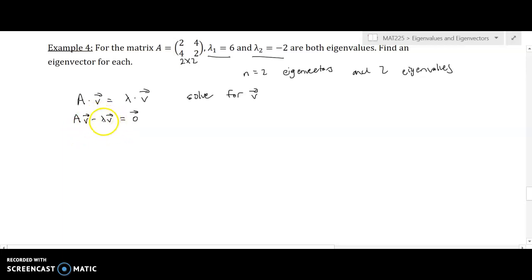But we have to be careful here because lambda is a scalar. So if I write this as AV minus lambda IV, now A is a 2 by 2, I is a 2 by 2, and I can factor out right factor AV.